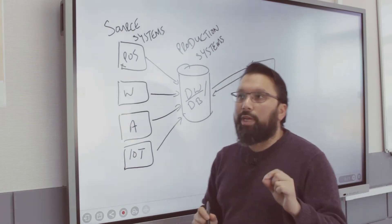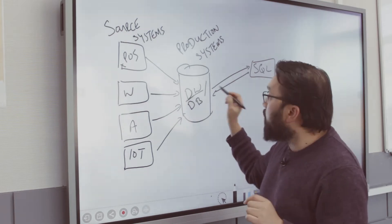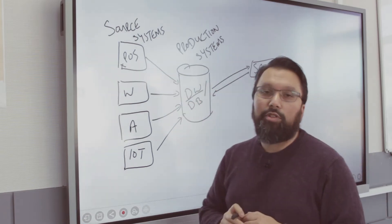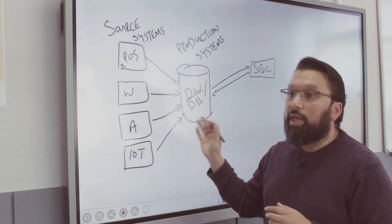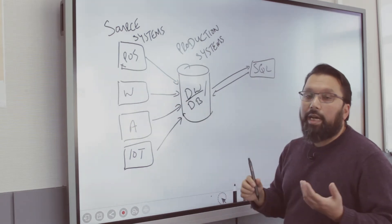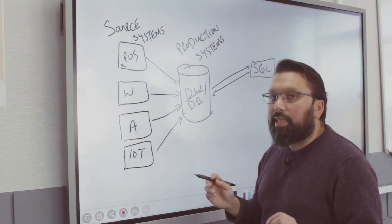And the reason for that is, if you query a production data warehouse, you're going to be using up resources. And if that resource is required by the point of sale, for example, to send data to the production environment, you may find that you lose data. So typically what happens is that companies don't query the live production environment.